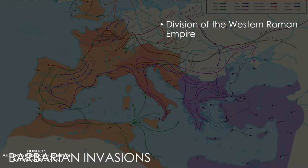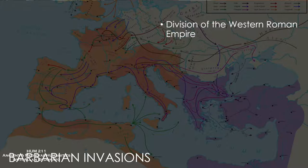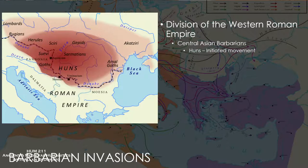By 395, the empire was divided into two. The barbarian migrations are what ultimately brought an end to the West, and this was going on for centuries before the West actually collapsed. It was a series of movements of different tribes into and toward Roman territory over centuries — a shunting movement where tribes pushing against other tribes ultimately resulted in collapse for Rome.